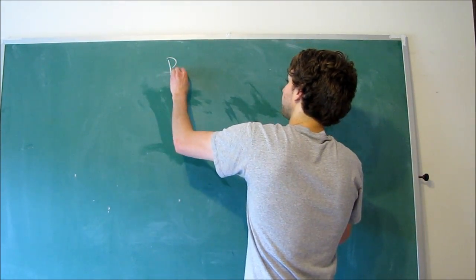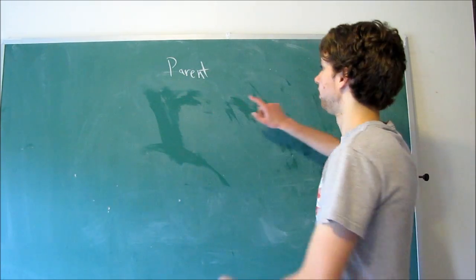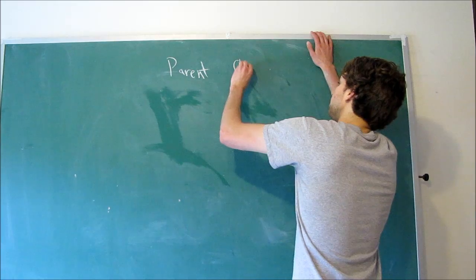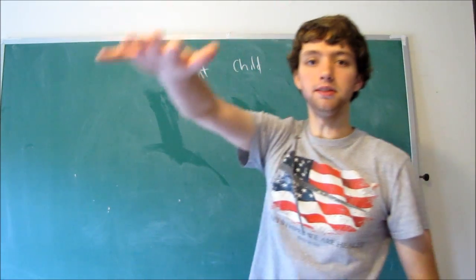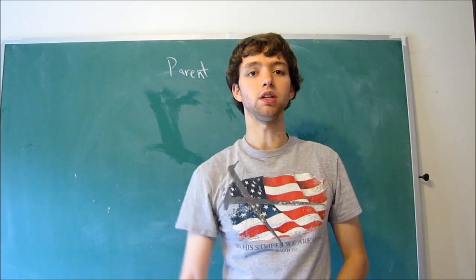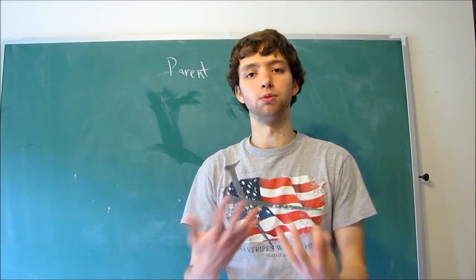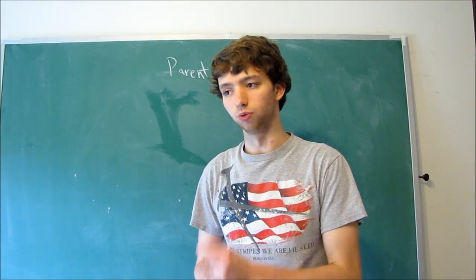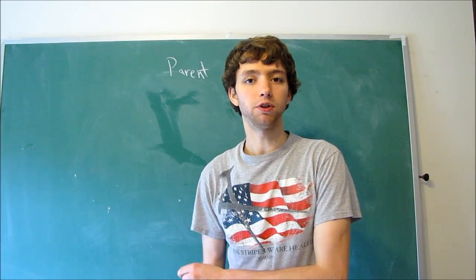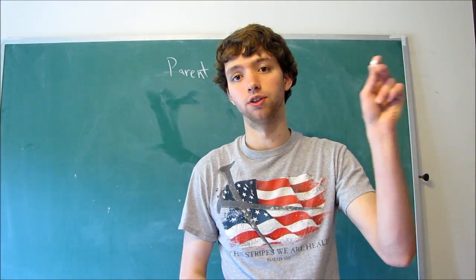When we design these relationships, a table is always the parent and a table is always the child. When we're talking about keys, keys keep things unique and they're used to connect tables that are related. Every table has a key that keeps it unique. When we create a foreign key, it references that primary key in another table.